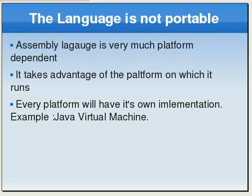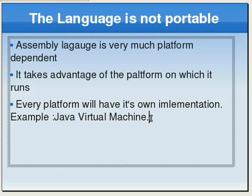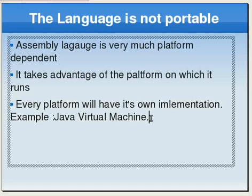You can get a taste of Assembly Language from the Java Virtual Machine. Java is platform independent, and it achieves that independence by virtue of the Java Virtual Machine. Every platform has its own implementation of the JVM, which provides a platform for Java programs to run. So if you take a JVM of Windows and put it on Linux, it simply won't run at all.